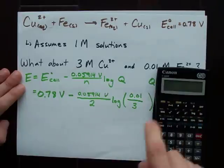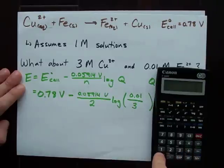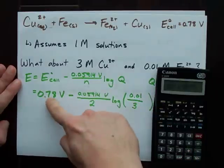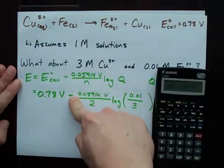Take the log of that, times 0.05914 divided by 2. Now I'm going to have 0.78 volts minus that.